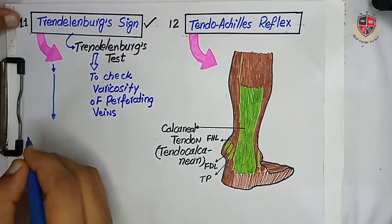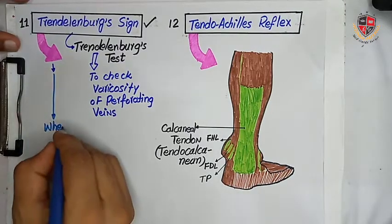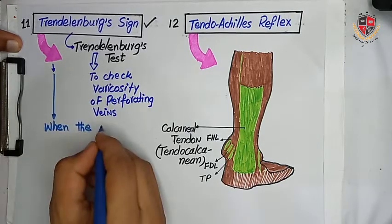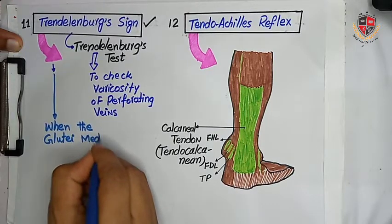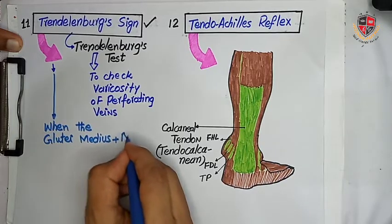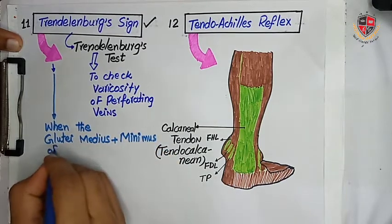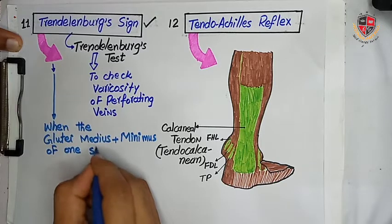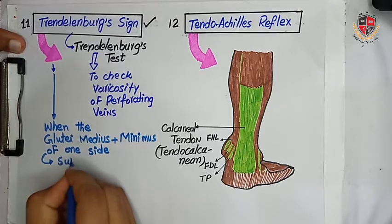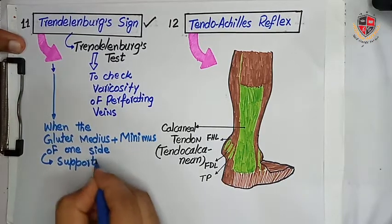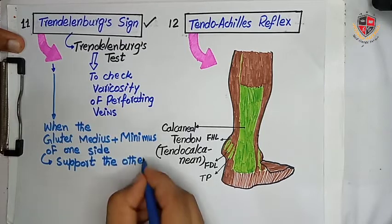Now, Trendelenburg's sign. When the gluteus medius and gluteus minimus of one side support the other side — which is the unsupported side — it is a normal mechanism. They support the unsupported opposite side.